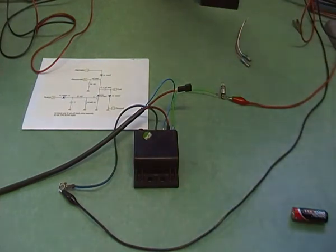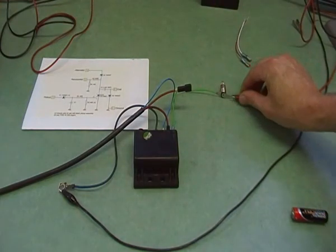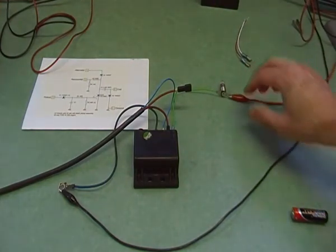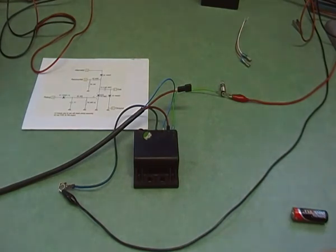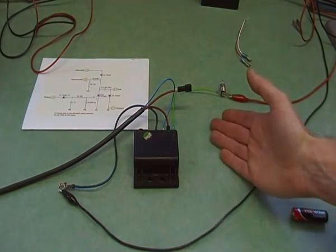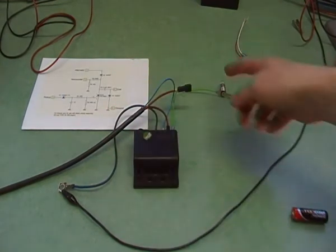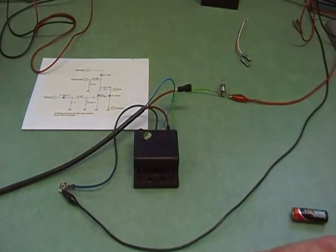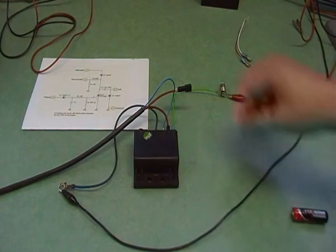And now if I run the pickup, the bulb lights, and again I can cancel it. So you could kick your bike over or turn it over on the electric starter and see if you're getting a signal.